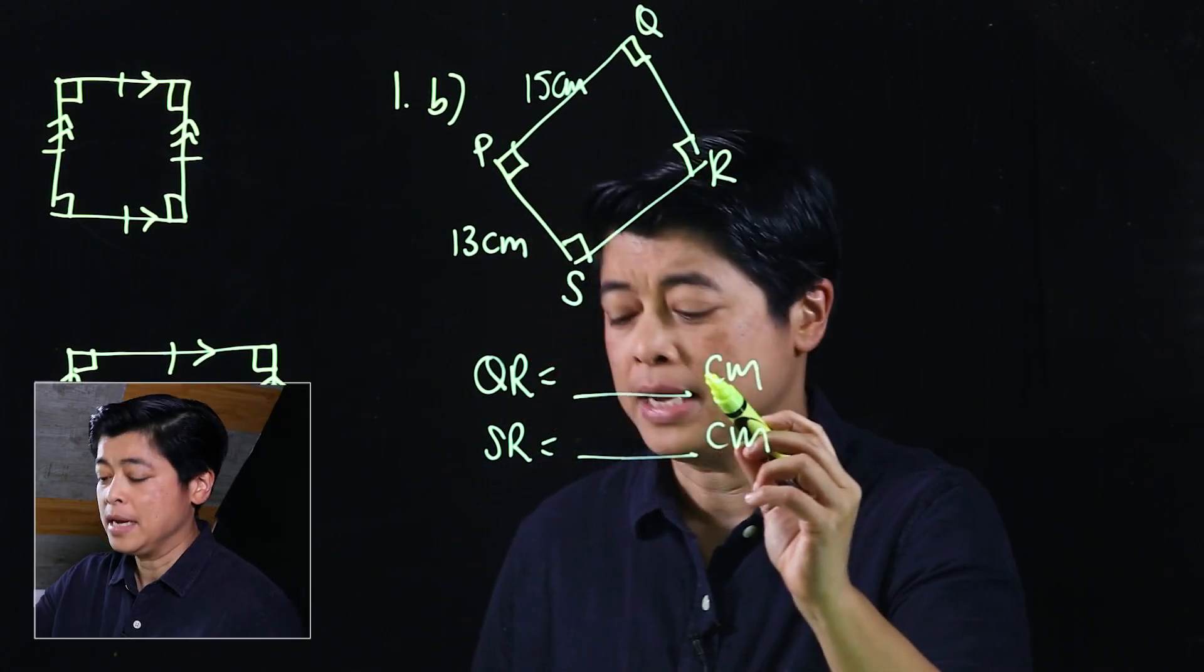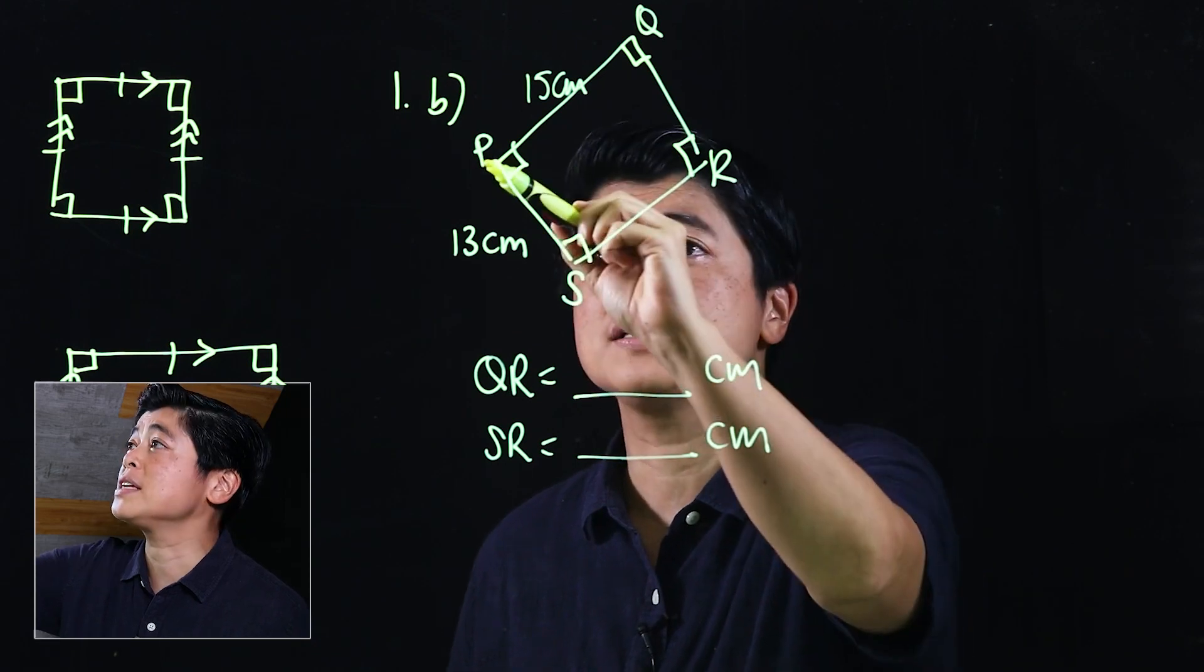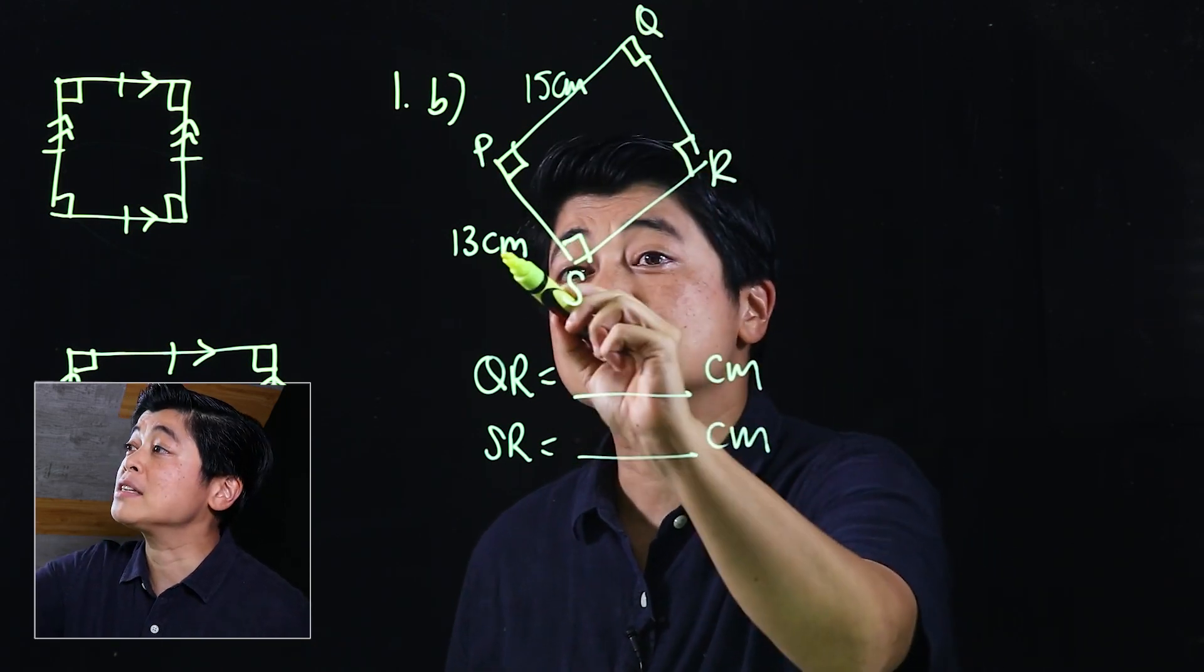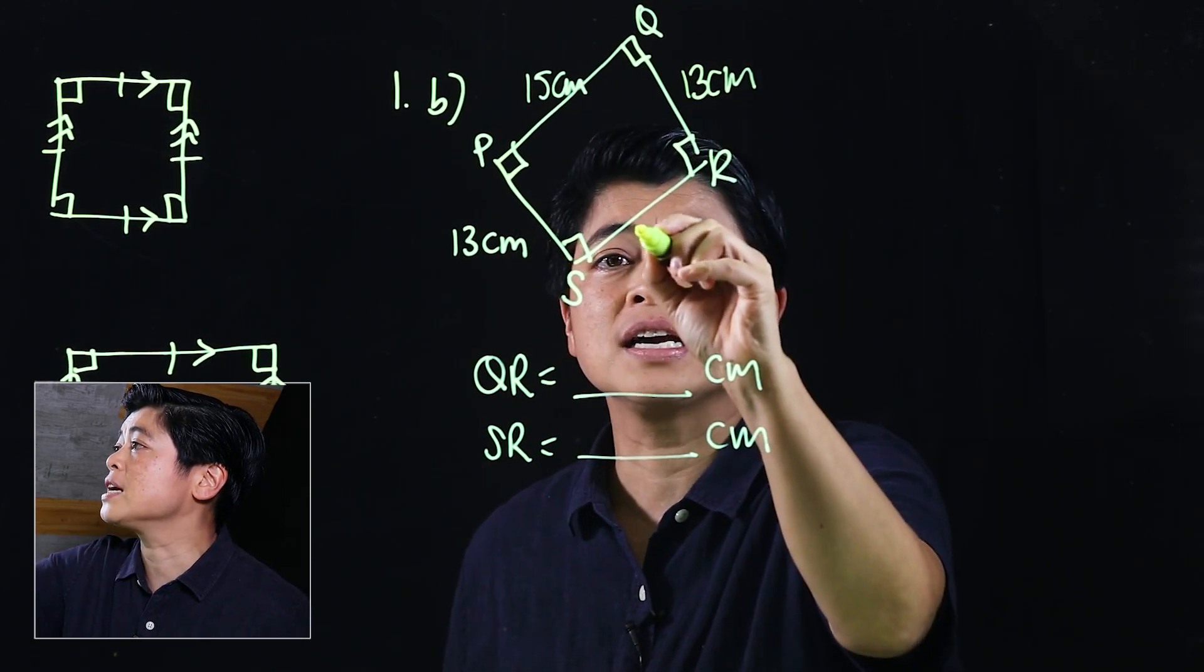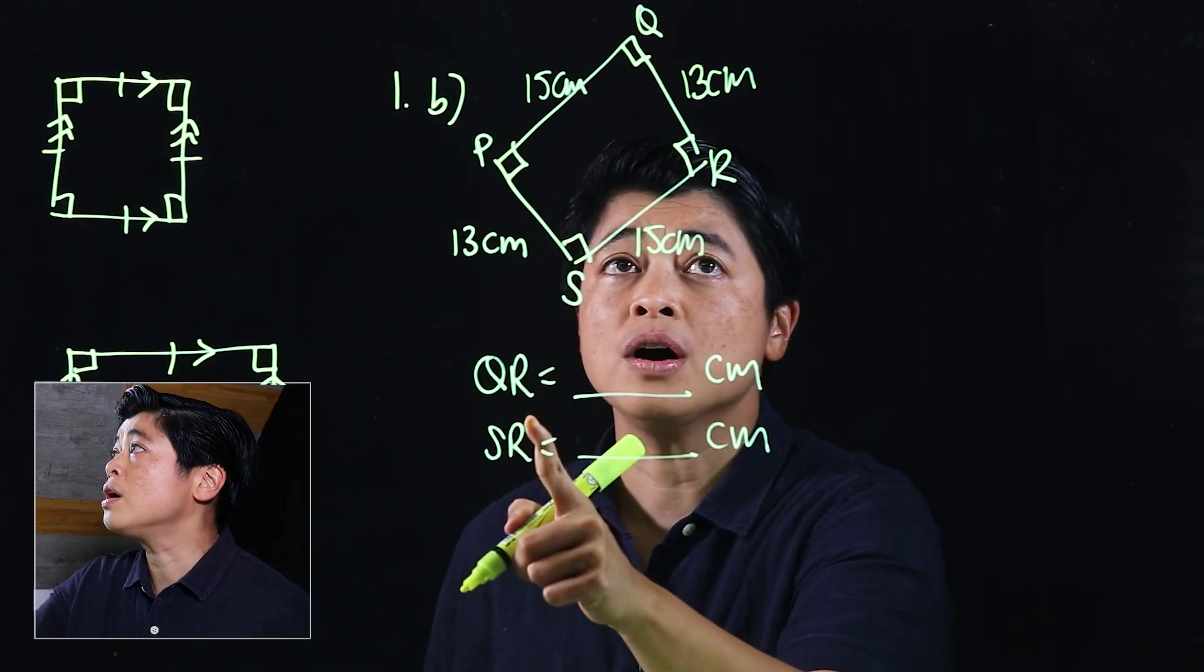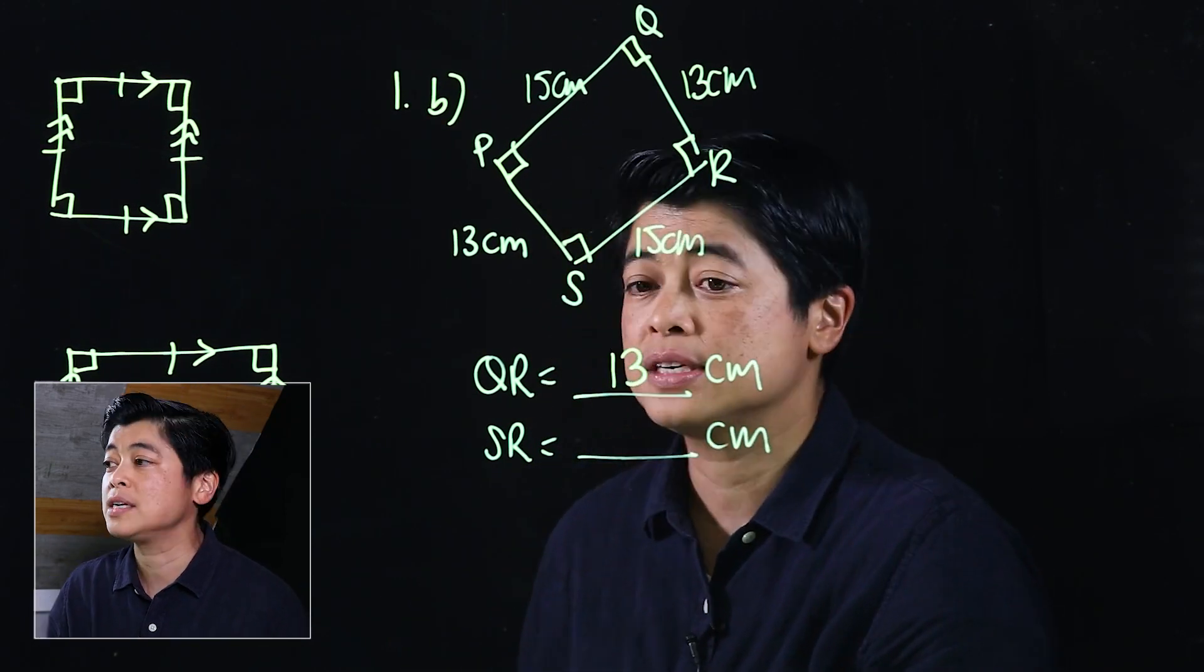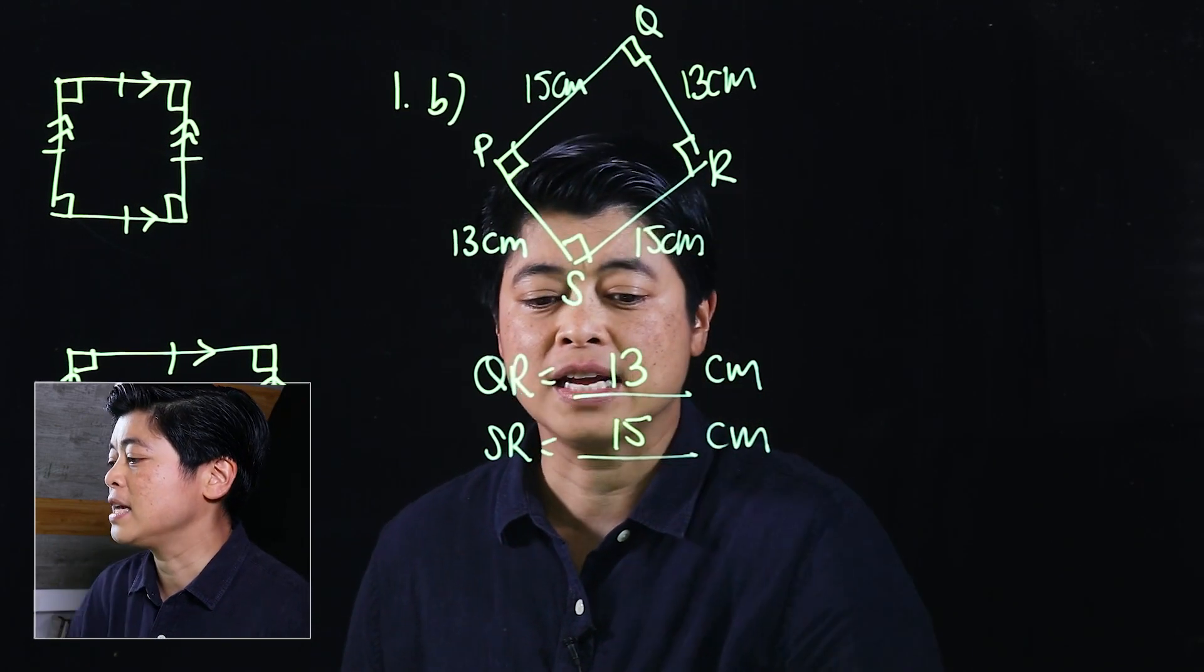For this problem, it says that this side is 13 centimeters and this side is 15 centimeters, which makes the opposite side also 13 centimeters and the opposite side also 15 centimeters. If the question says what is the measurement of QR, QR technically is 13 centimeters, and SR would be 15 centimeters.